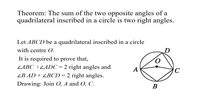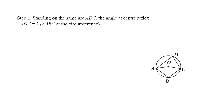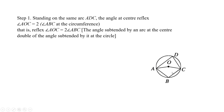Drawing: join O,A and O,C. For proof, first step. Standing on the same arc ADC, the angle at the center — reflex angle AOC — is equal to two times angle ABC at the circumference. That is, reflex angle AOC equals two times angle ABC, since the angle subtended by an arc at the center is double the angle subtended by it at the circle.